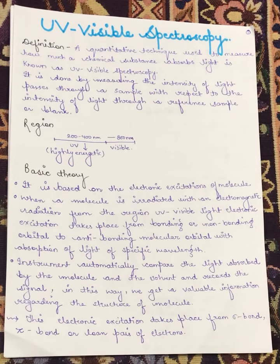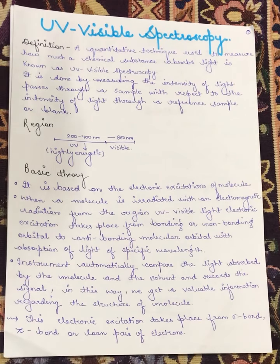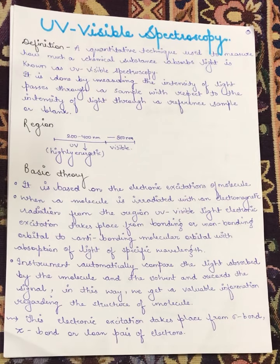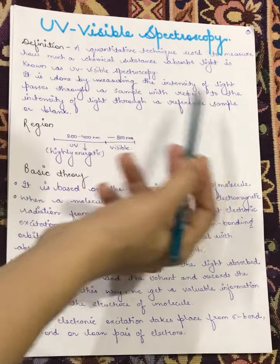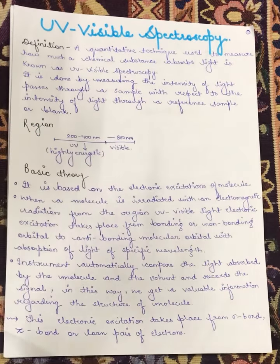UV-visible spectroscopy is a quantitative technique used to analyze how much a chemical substance can absorb light. The principle is that it is done by measuring the intensity of light passing through a sample with respect to the intensity of light through a reference sample and a blank.